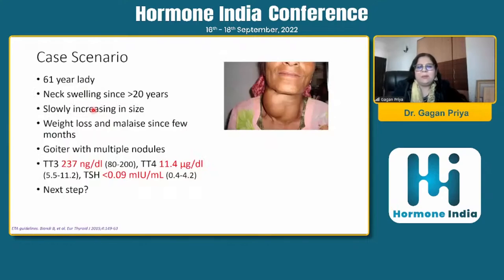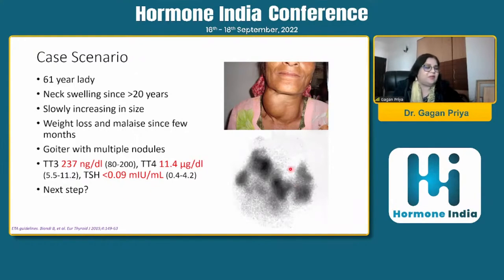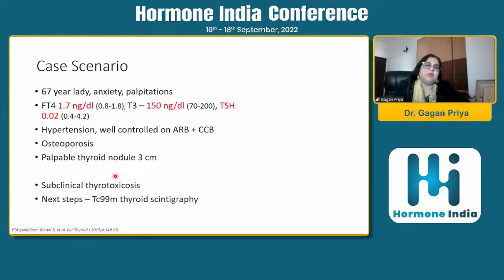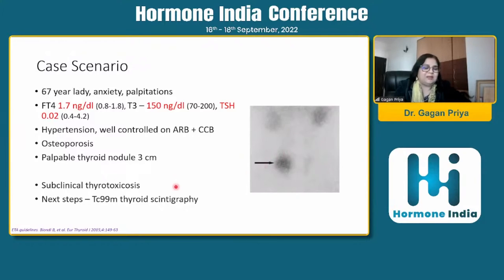A 61-year-old lady with a clear multinodular goiter and thyrotoxicosis requires both ultrasound and technetium scintigraphy — scintigraphy for the cause of hyperthyroidism, and ultrasound to plan further steps, as surgery is most likely. A 67-year-old lady with anxiety, palpitations, subclinical thyrotoxicosis, hypertension, and a three-centimeter nodule is clinically suggestive of an autonomously functioning thyroid nodule. Technetium scintigraphy confirms the toxic adenoma, and it can be easily managed with radioiodine ablation.